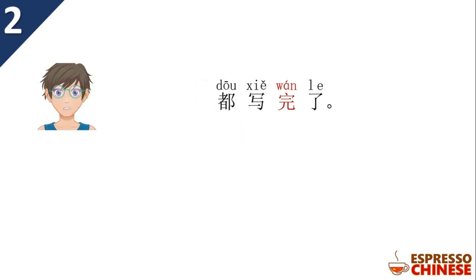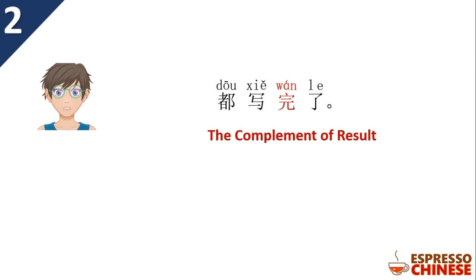The son replies: 都写完了。 都 means 'all.' So, all of them 写完了. Again, 完 is a complement of result — you put it after 写 to show you finished doing something. In this case: all of the homework I have finished.